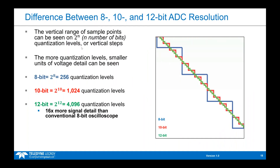To recap: the vertical range of sample points can be seen on two-to-the-n quantization levels, and the more of those quantization levels you have, the smaller the units of voltage detail you can see. Even though 8-bit, 10-bit, and 12-bit sound very close in numbers — they're only separated by two bits each — they have exponentially different numbers of quantization levels. With 8-bits we have only 256 quantization levels, and with 12-bits we have over 4,000. That's 16 times more signal detail by adding only four more bits of resolution in the ADC. You can see what that looks like visually with the conventional 8-, 10-, and 12-bit oscilloscopes here. The green is the 12-bit oscilloscope, blue is the 8-bit, and you can see approximately 16 times less quantization noise with 12-bits.